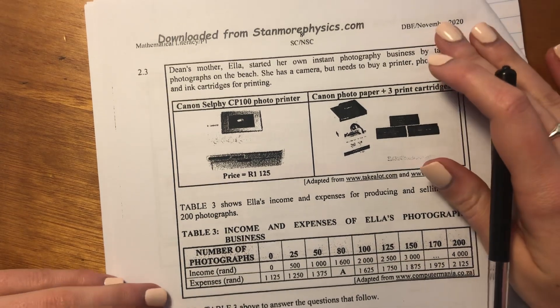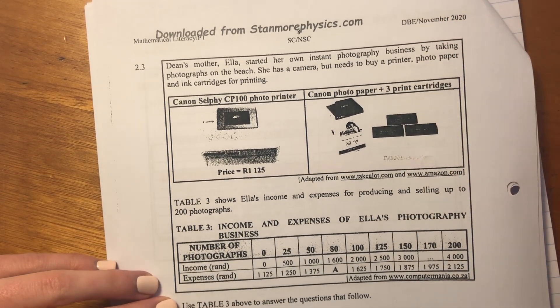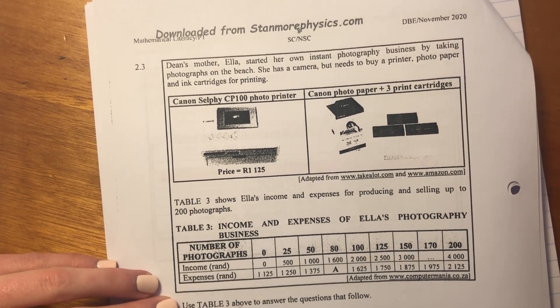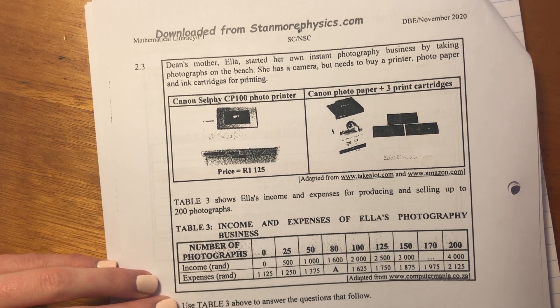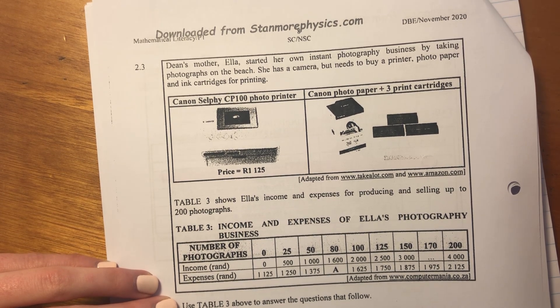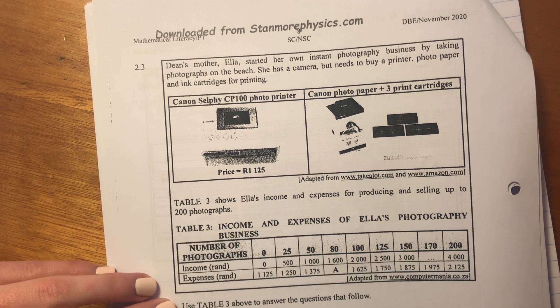Okay, 2.3. It says Dean's mother, Ella, started her own instant photography business by taking photographs on the beach. She has a camera but needs to buy a printer, photo paper, and ink cartridges for printing.